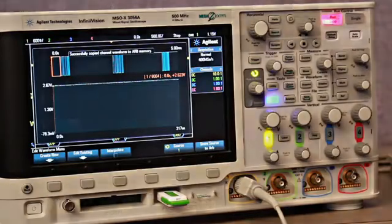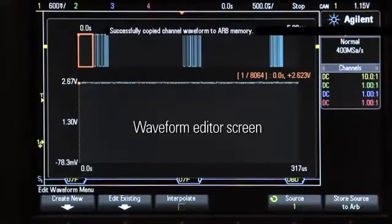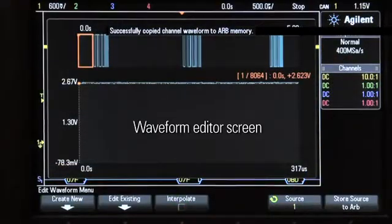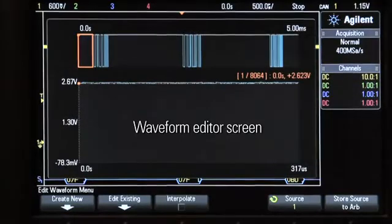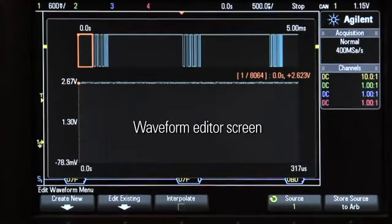That's it. This waveform is now stored in the AWG's memory, and should also be present on the output B and C of our generator that's built right into the scope.